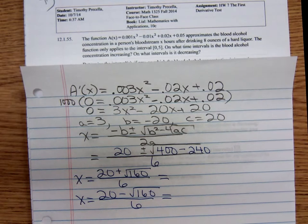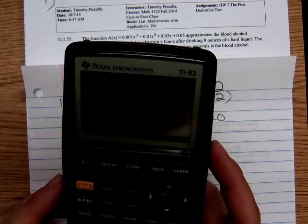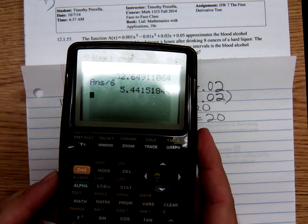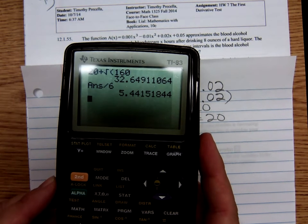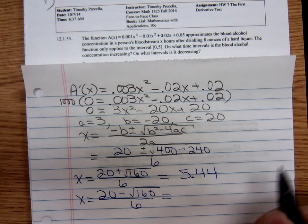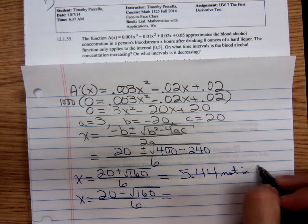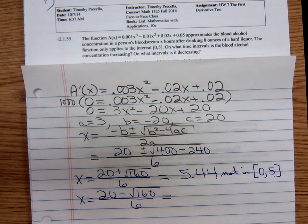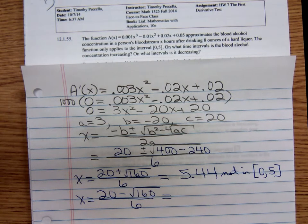Okay, here I got my calculator. 20 plus the square root of 160 all divided by 6. Let's see if you can see this display, my calculator display. The problem says to round to the nearest hundredths so that would be 5.44. Now there's a problem with that 5.44. 5.44 is too big for our interval, it's not in the interval. We're only looking over the first five hours from zero to five, so we're going to have to discard that 5.44. We're not going to count that as a critical number.